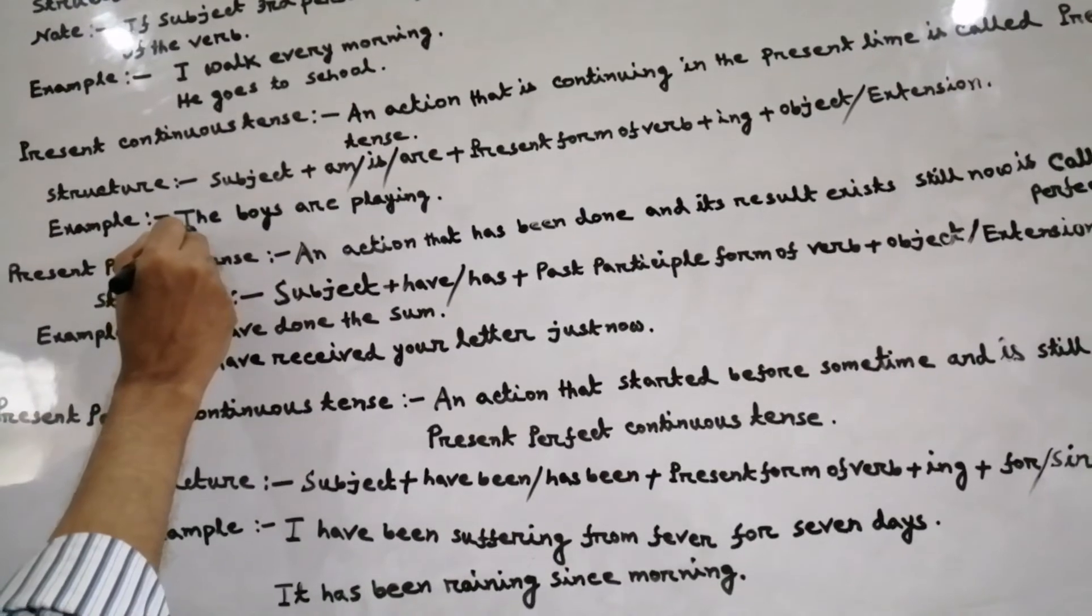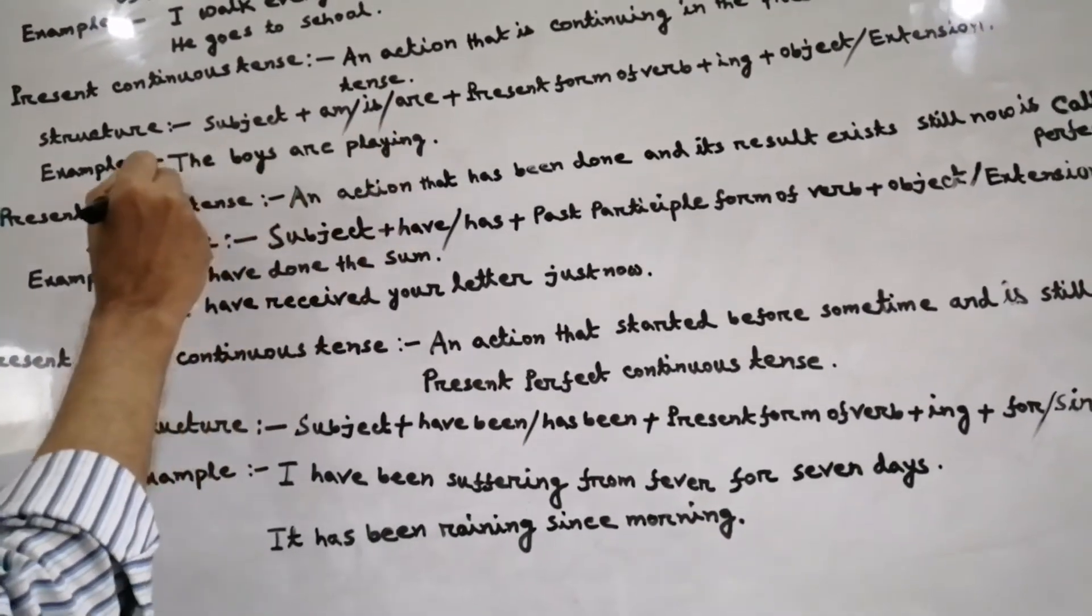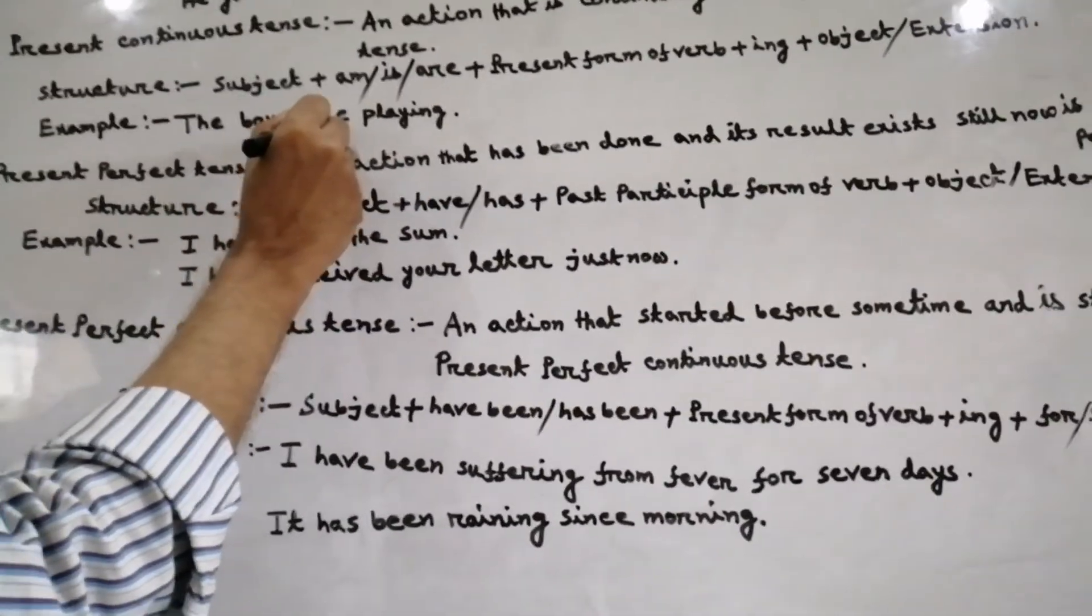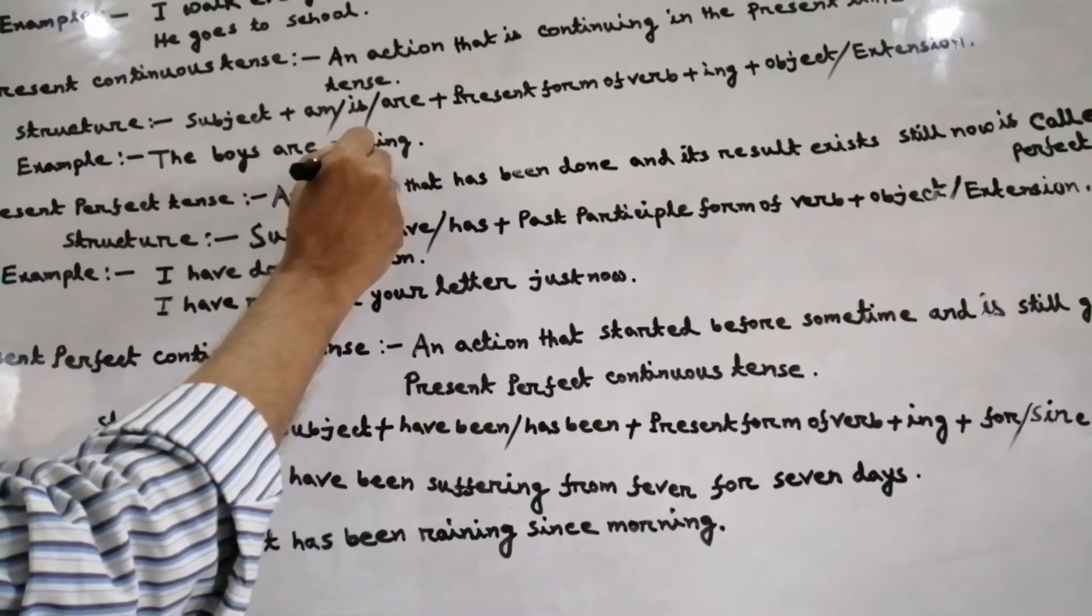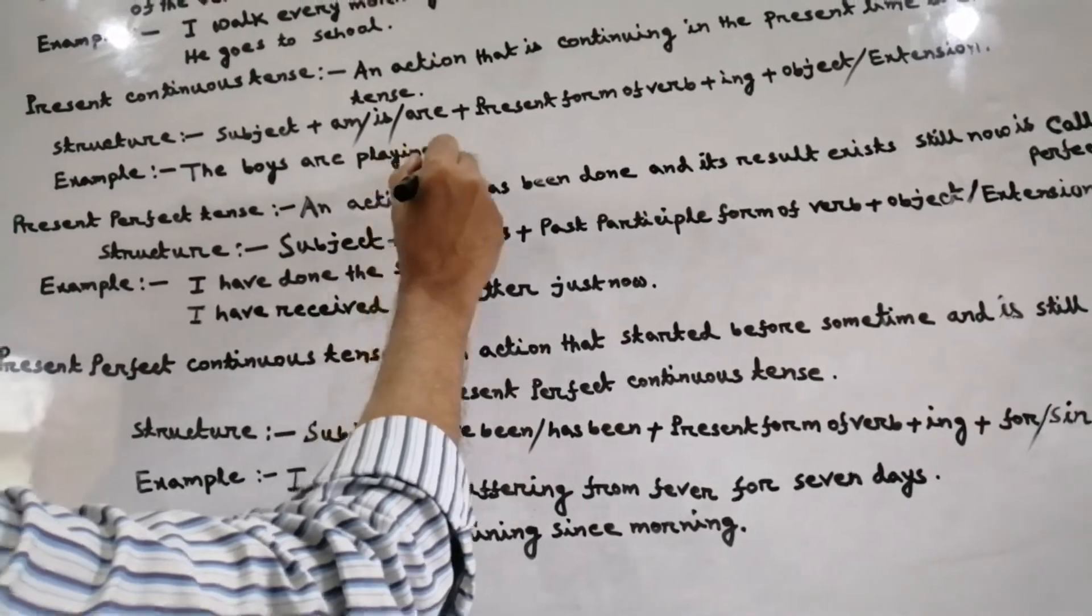Example: the boys are playing. Here the boys subject, are auxiliary verb, playing present form of verb with ing.